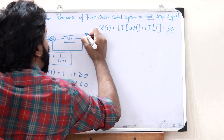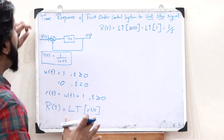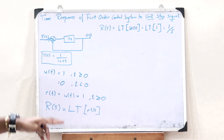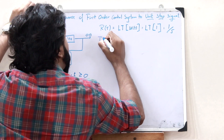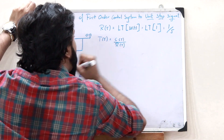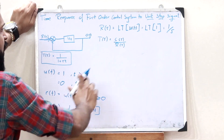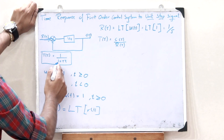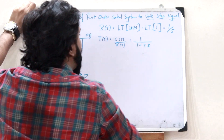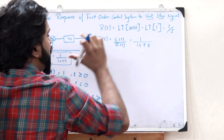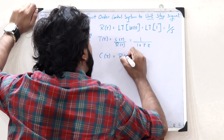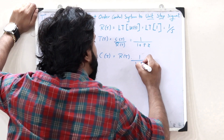We are supposed to find the value of c(s). We know that the relationship between c(s) and r(s) is given by the transfer function: T(s) = c(s) / r(s), which is the output divided by the input. We have obtained the transfer function as 1 / (1 + s·τ). Therefore, c(s) = r(s) × 1 / (1 + s·τ).